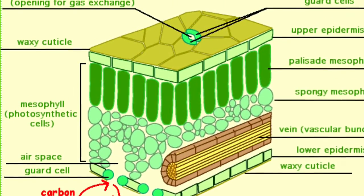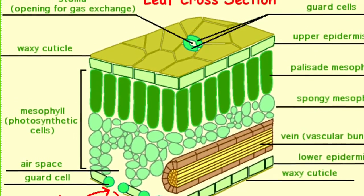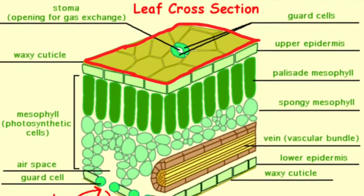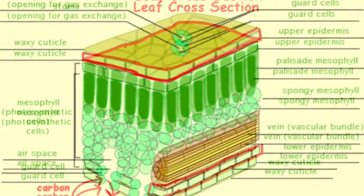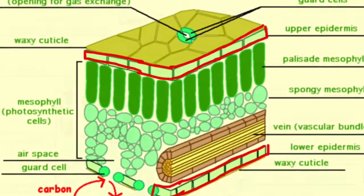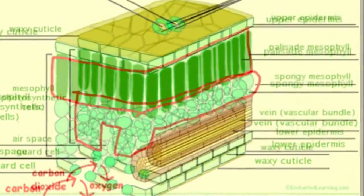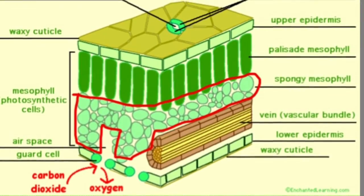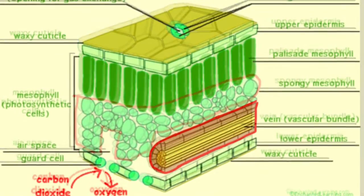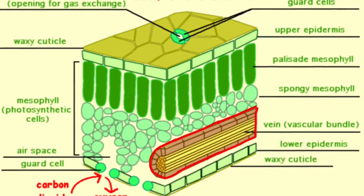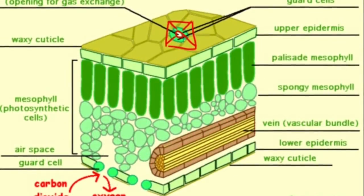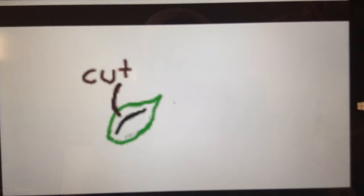The internal system of a leaf where photosynthesis occurs is made up of the cuticle, the epidermis, palisade, the spongy mesophyll layer, the main vein, and the stomata.